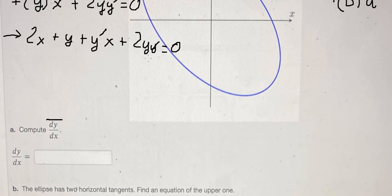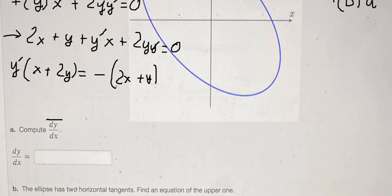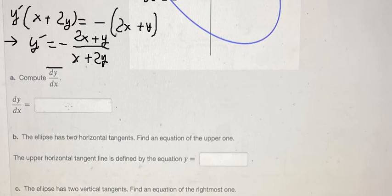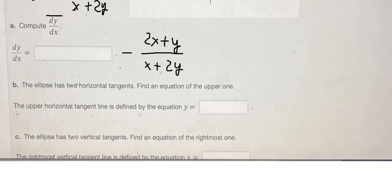We need to arrange and collect the dy/dx terms using factorization. I'll move the remaining term to the right side, then divide both sides by that factor. So the answer for question (a) should be like this.